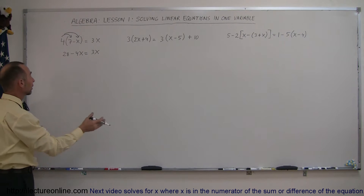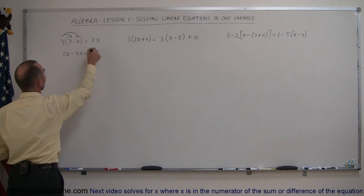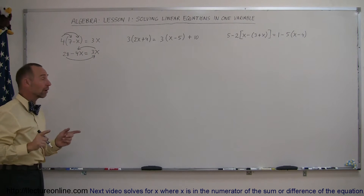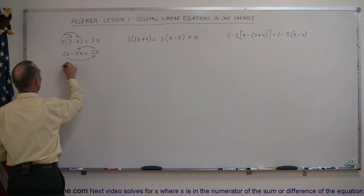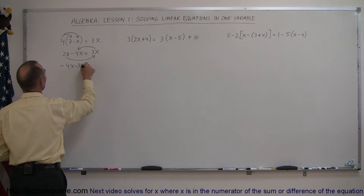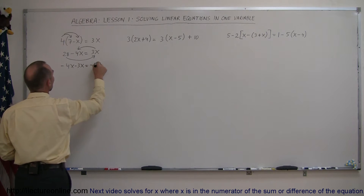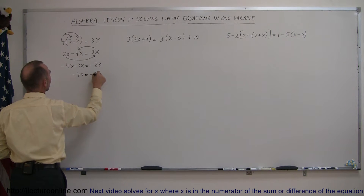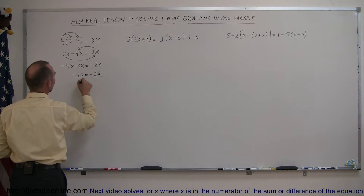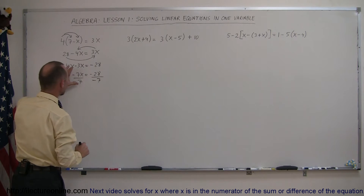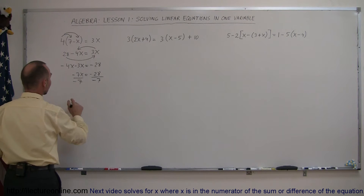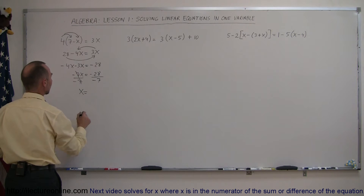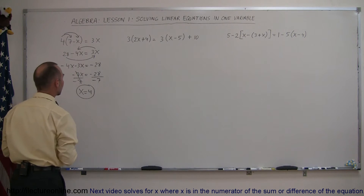We're going to move all the terms with x to one side, everything else to the other side. The 3x goes to the left, the 28 goes to the right of the equal sign, remembering that when you cross the equal sign the sign changes. So this becomes minus 4x minus 3x equals minus 28. Now we combine like terms: minus 4x minus 3x is minus 7x equals minus 28. Now we divide both sides by the numerical coefficient — the number in front of the x on both sides. The minus 7 cancels out, so we have x equals minus 28 divided by minus 7, which is plus 4. And there's the answer for our first problem.